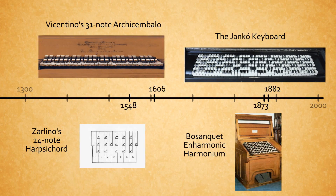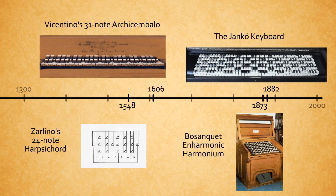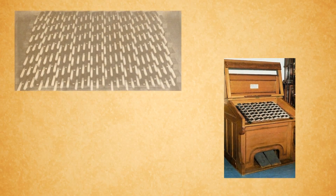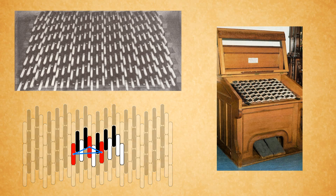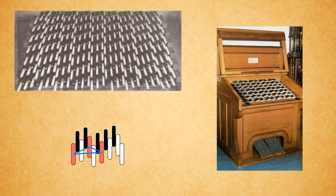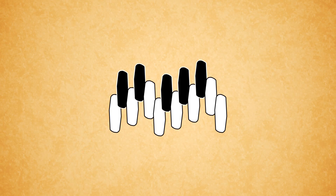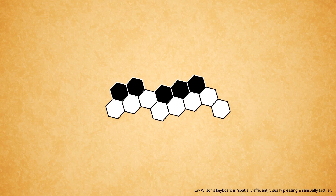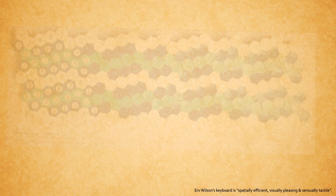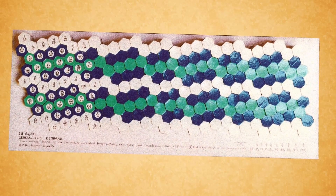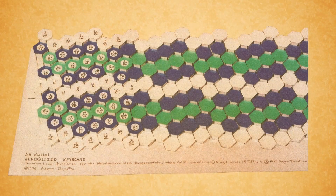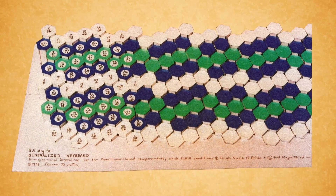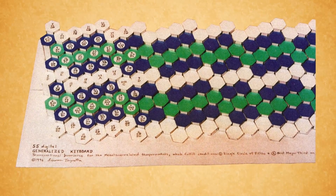The first generalized keyboard was invented in 1873 by Robert Bosanquet. His enharmonic harmonium made it possible for any passage, chord, or combination of any kind to have exactly the same form under the fingers in whatever key it was played. Irv Wilson was the first to innovate over Bosanquet. Simon Terpstra also designed his hexagonal keyboard focusing on the feel of the keys under the hands, but preserved Bosanquet's principle of elevation. Before becoming an instrument, a scale model was made out of cardboard, and every detail was fine-tuned until the feel of the keys under the fingers was right.